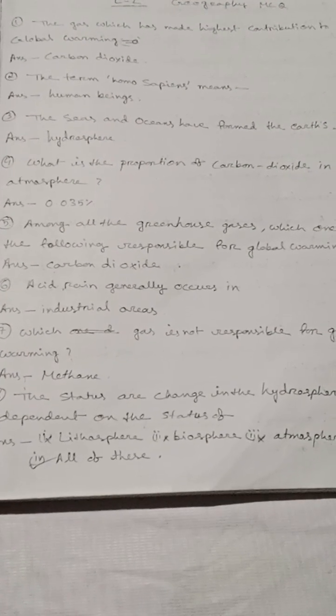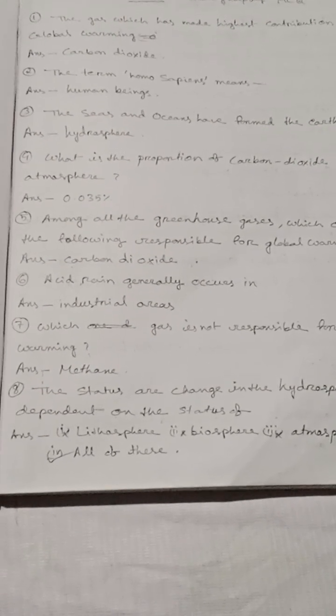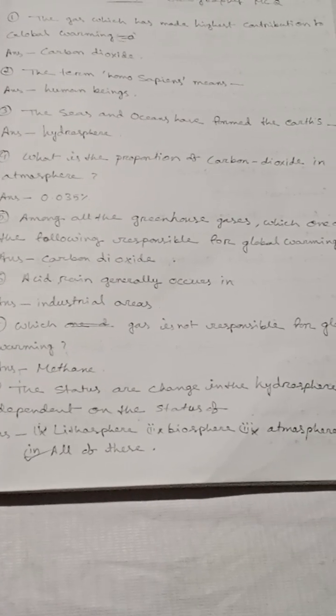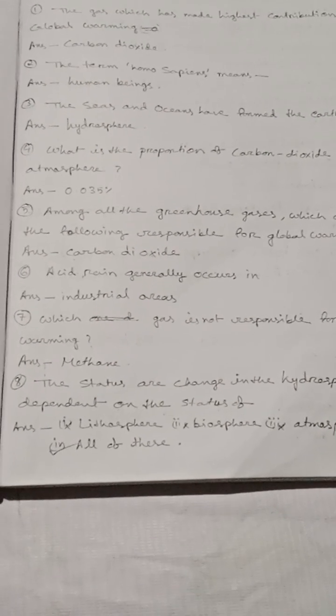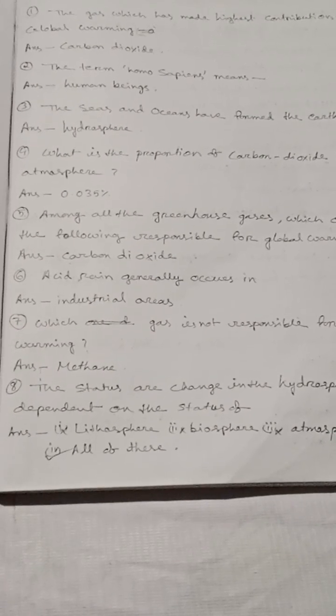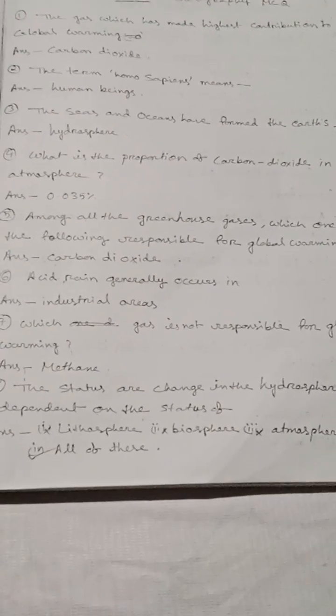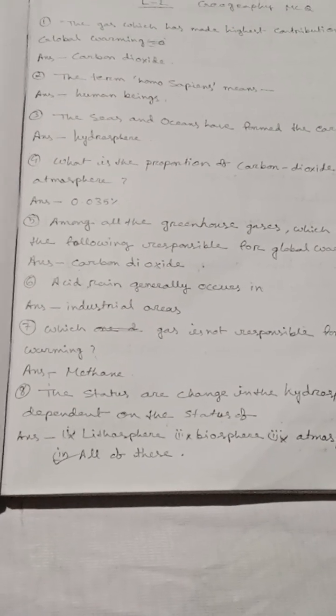Question No. 3: The seas and oceans have formed the earth's hydrosphere. Question No. 4: What is the proportion of Carbon Dioxide in the atmosphere? Answer is 0.035%. Question No. 5: Among all the greenhouse gases, which one is responsible for global warming? Answer is Carbon Dioxide is responsible for global warming.